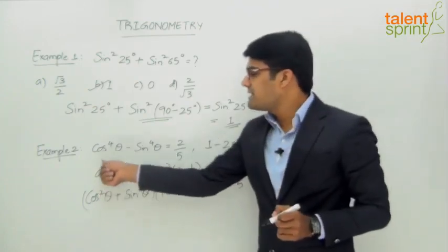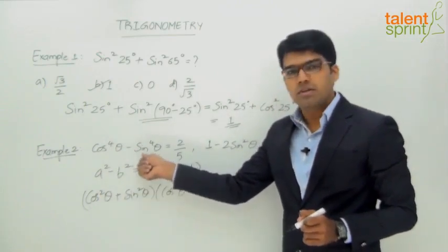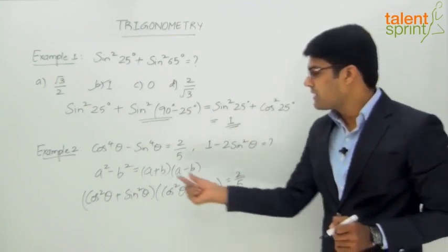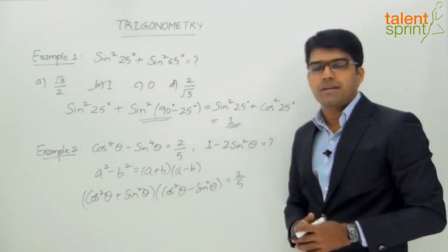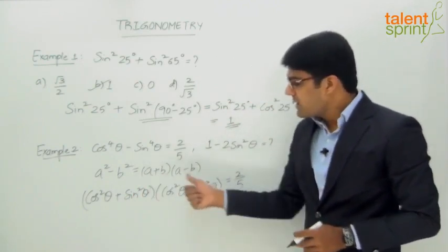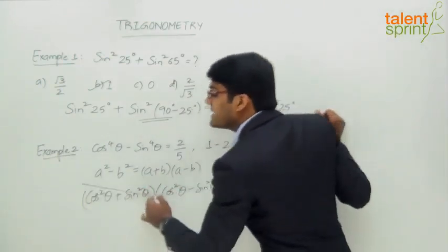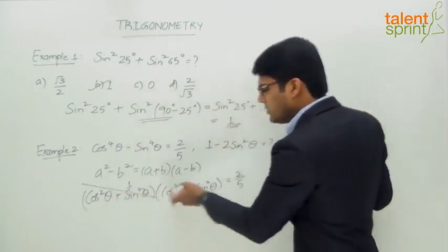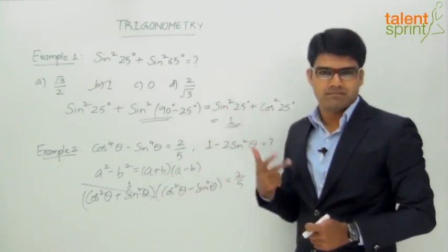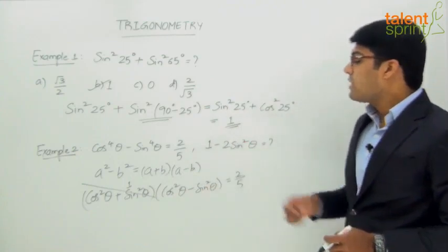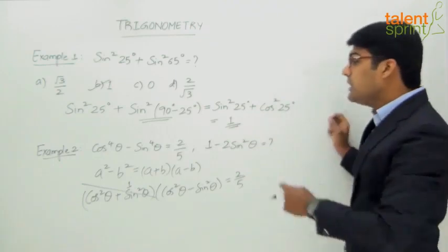Here A is cos²θ and B is sin²θ, so A + B is cos²θ + sin²θ and A - B is cos²θ - sin²θ. Now, cos²θ + sin²θ = 1 by the basic trigonometric identity, so that factor becomes 1. We are left with cos²θ - sin²θ = 2/5.